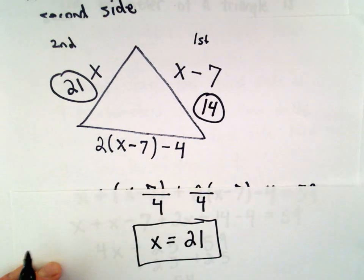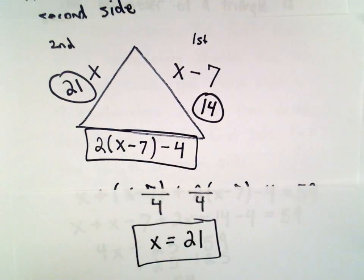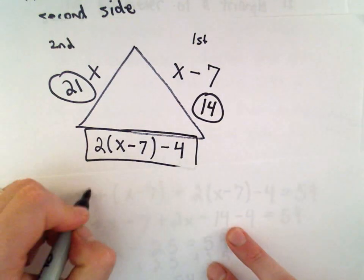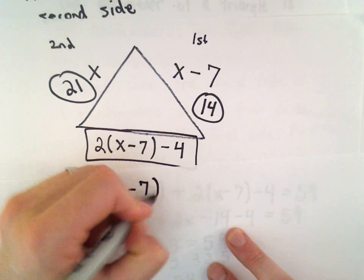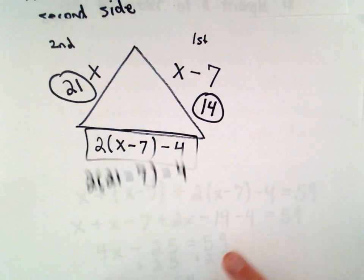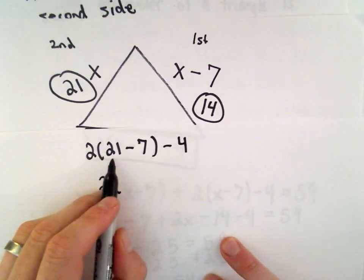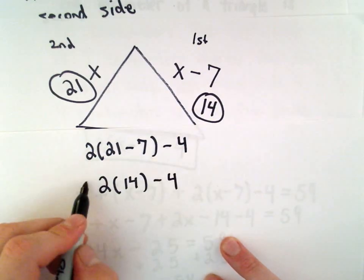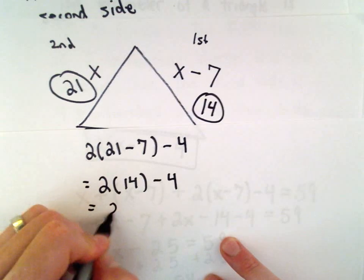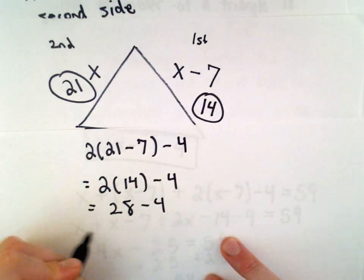If we plug in x equals 21 into our third side, we'll get 2 times x, which we said is 21 minus 7 minus 4. Well, 21 minus 7, we just said that's 14. Well, 2 times 14 is going to be 28. Subtract 4. That will leave us with 24.